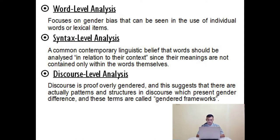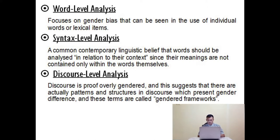As you can see on the slide, the first is word level analysis — it focuses on gender bias that can be seen in the use of individual words or lexical items. This consists of three elements: generic pronouns, generic nouns, and naming and endocentrism. The second is syntax level — it is a common contemporary linguistic belief that words should be analyzed in relation to their context. This contains four elements: ready-made phrases, metaphors, jokes and humor, and transitivity choices.